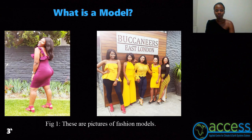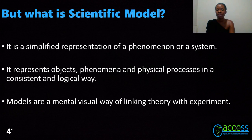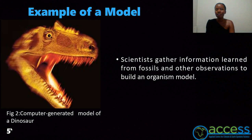What is a model? What first comes to your mind when someone is talking about a model? I bet it's a picture of beautiful fashion models, as shown in figure one. But I'm here today to talk about a scientific model. A scientific model is a simplified representation of a system — it represents objects, phenomena, and physical processes in a consistent and logical way. There's not much difference between fashion models and scientific models: fashion models focus on designing clothes, whereas scientific models are about coming up with theories and experiments in order to produce a model.